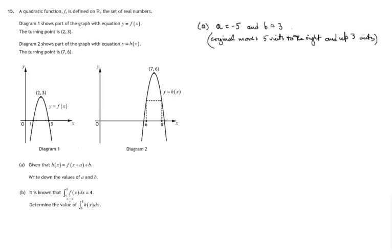Let's move on to part b. We're told that the integral from 1 to 3 of f of x dx is equal to 4. Interpreting that on this diagram, that would be the area enclosed between the x-axis and the curve y equals f of x between x equals 1 and x equals 3, and we're told the value of that area is 4.